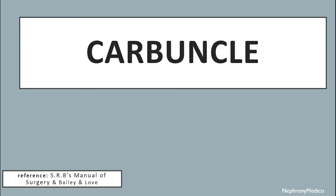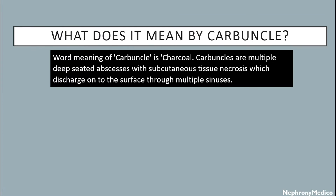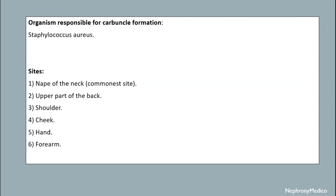Welcome. Let's talk about carbuncle. The word meaning of carbuncle is charcoal. Carbuncles are multiple deep-situated abscesses with subcutaneous tissue necrosis which discharge onto the surface through multiple sinuses. The organism responsible is Staphylococcus aureus.